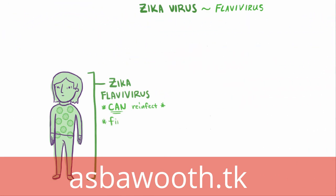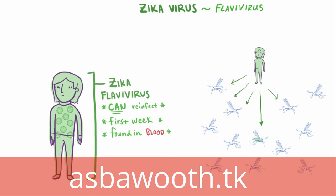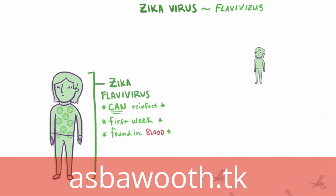This window lasts for the first week of infection, during which the Zika virus can be found in the blood. So if humans with the disease can transmit back to mosquitoes, then you can imagine that areas where there are a lot of mosquitoes would be set up for spreading the virus super quickly.